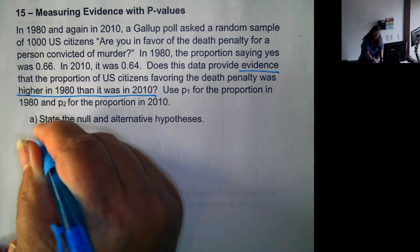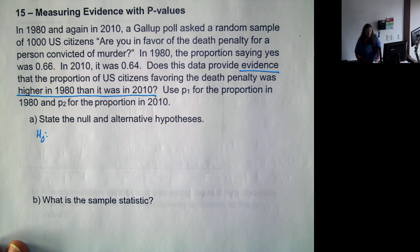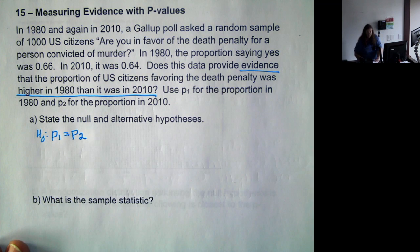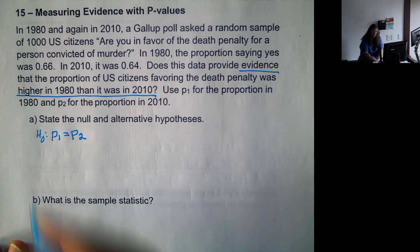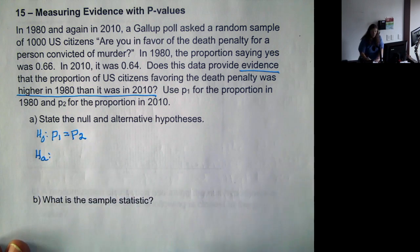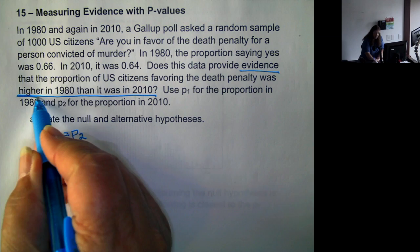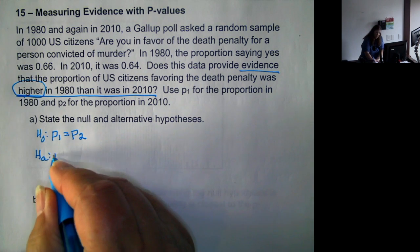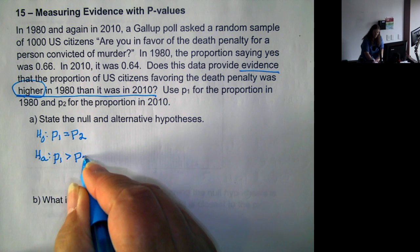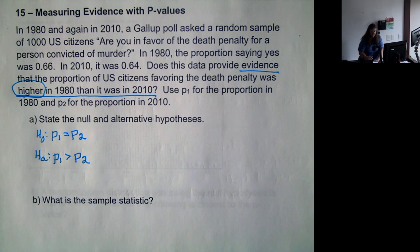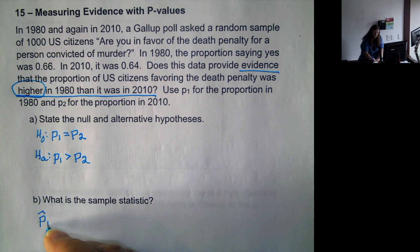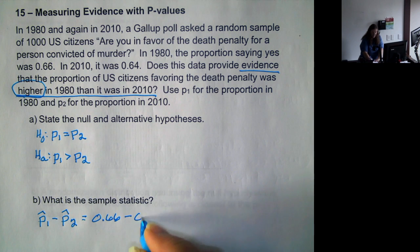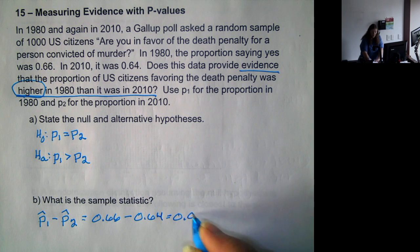State the null and alternative. This is a situation where we're talking about two different samples. So we have p1 equals p2 because in the null hypothesis it's always equal — we're always assuming there is no change. The alternative, in this case, says it's higher in 1980, so it is giving us our direction for the difference. So we want to see if p1 is greater than p2. The sample statistic is p-hat sub 1 minus p-hat sub 2, which is 0.66 minus 0.64, which is 0.02.